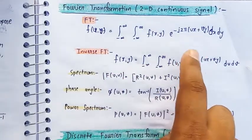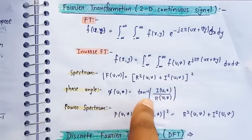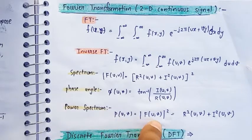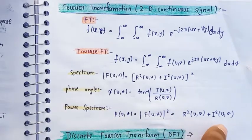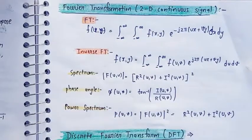In the spectrum, R square plus I square, the whole square, and psi is equal to tan inverse I upon R. The power of the spectrum is |F| whole square, R square plus I square. So this is how we can simplify our 2D continuous signal and 1D continuous signal in Fourier transformation.